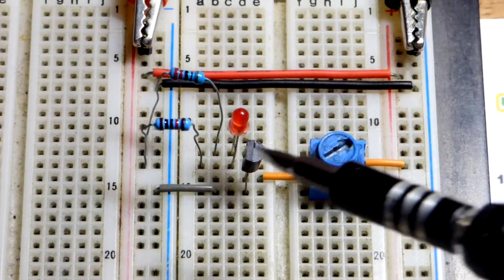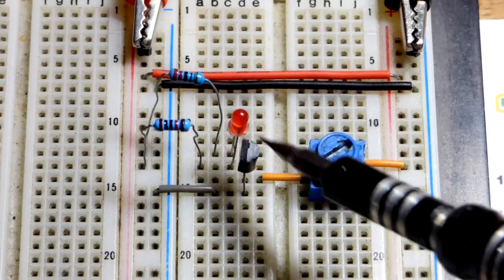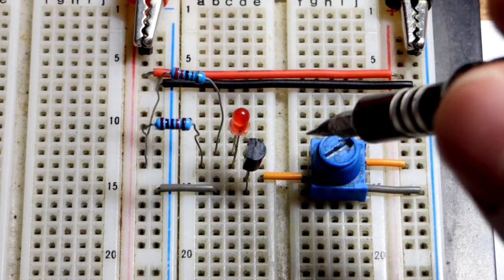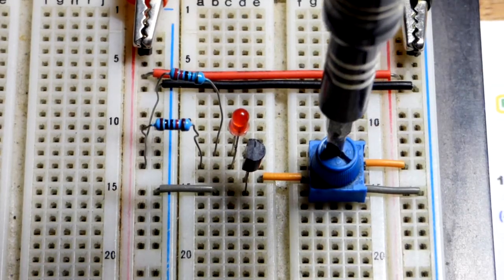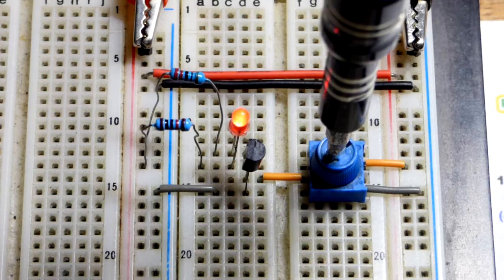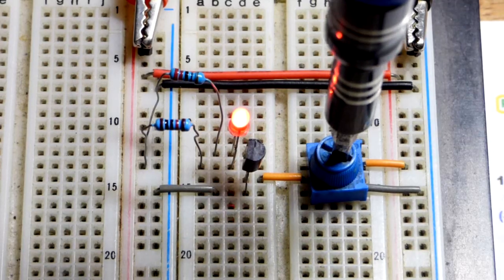So now in this video, we have a PNP bipolar junction transistor right here, wired as an emitter follower. With the trim pot to the positive supply, the LED is going to be off. As I turn it to the negative supply, you can see the LED gets brighter right there.